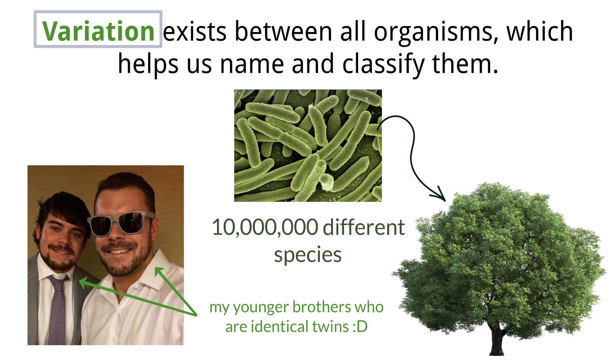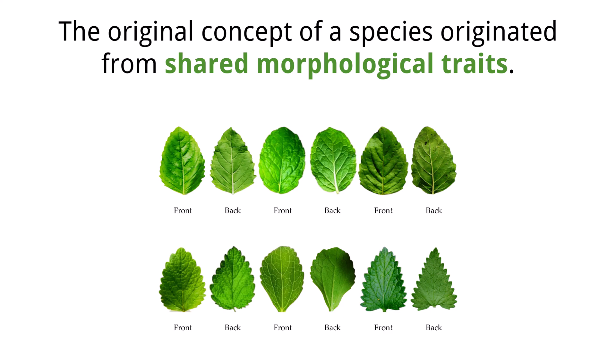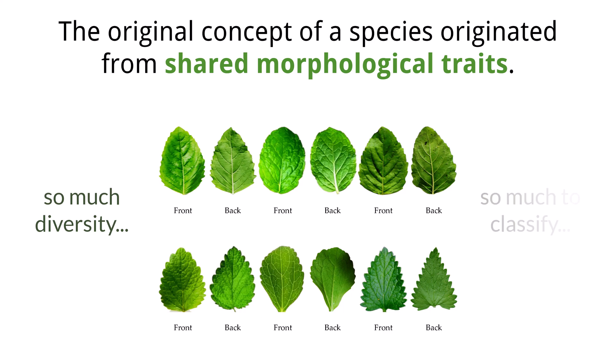These variation patterns can be very complex, and are the basis for how organisms are named and classified by humans. There is such a vast amount of biodiversity on our planet, and for scientists and other people who seek to understand and classify every living thing they come across, it can be a difficult task to try to sift through the variation and make sense of it all.